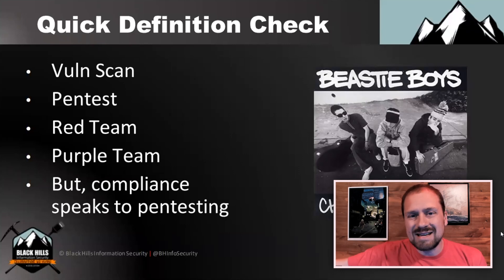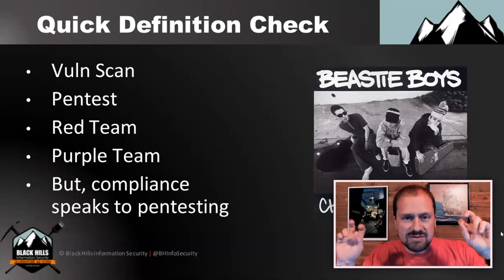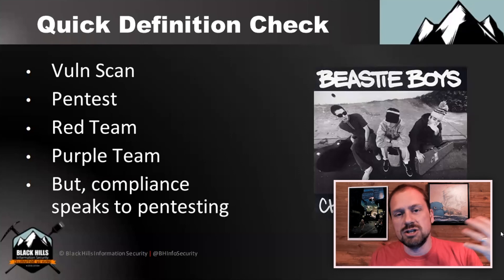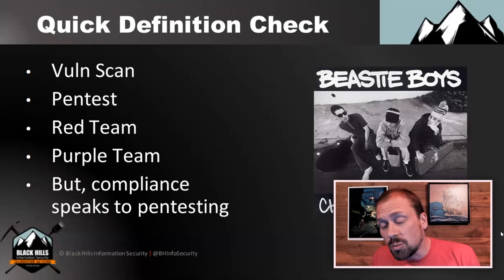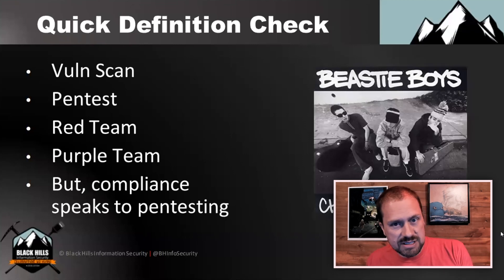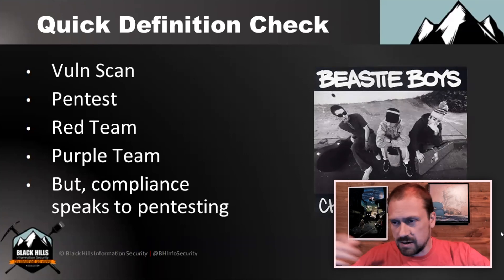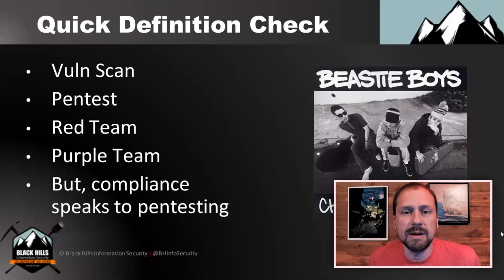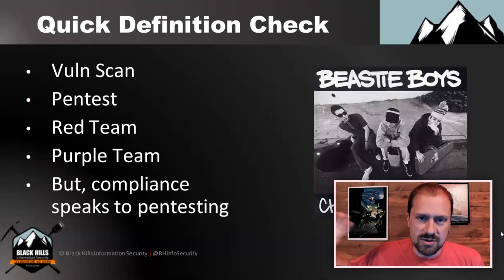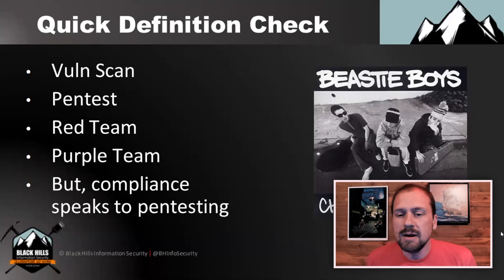A red team is where you're doing adversarial emulation — you're coming in stealthily, and your goal is not to enumerate a huge number of vulnerabilities but to really exercise the blue team and their ability to detect. A purple team is collaborative, where you're working together with the blue team.